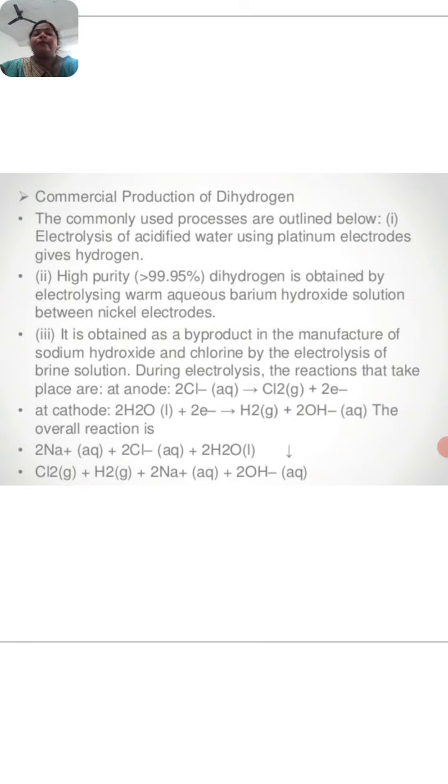Commercial production of dihydrogen: the commonly used processes are outlined below. Electrolysis of acidified water using platinum electrodes gives hydrogen. High purity dihydrogen is obtained by electrolysis of warm aqueous barium hydroxide solution between nickel electrodes. In 10th class science chapter number 1 we studied electrolysis of water. At cathode, hydrogen H2 is released, and at anode, oxygen gas is released.